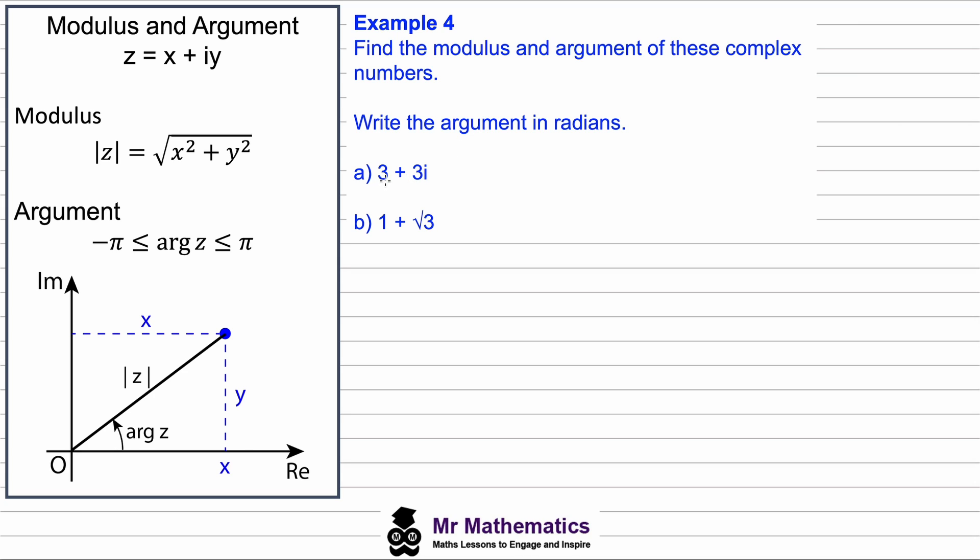If we were to plot 3 + 3i on an Argand diagram, we'll have a real part and an imaginary part. We know the real part will have a real value of 3, and the imaginary part will also have 3, which is this 3 here.